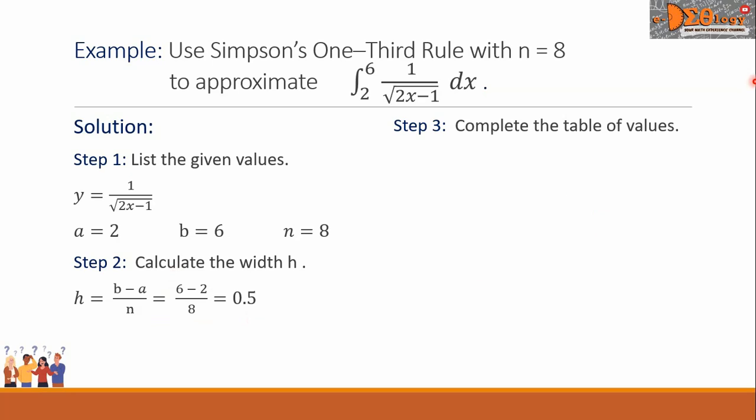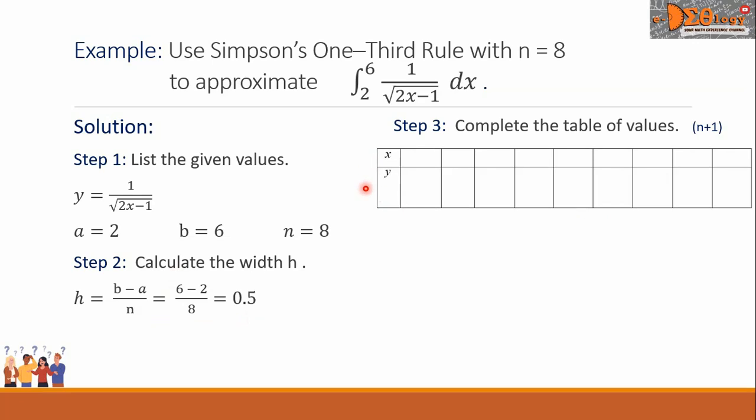Step 3, let us complete the table of values for x and y. For the number of columns here, we write n plus 1. Our n is 8, so 8 plus 1 must be 9. So we have here 9 added columns.